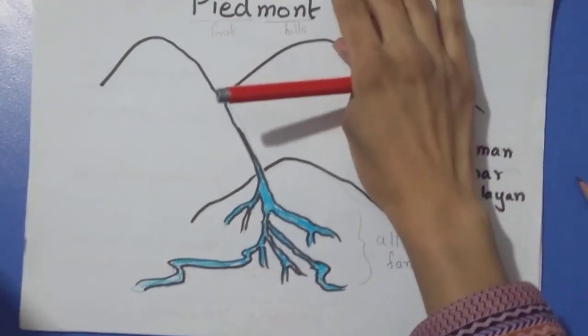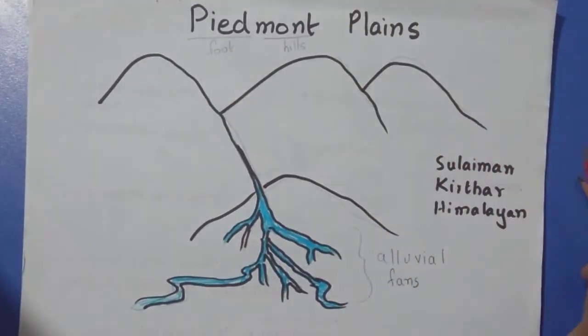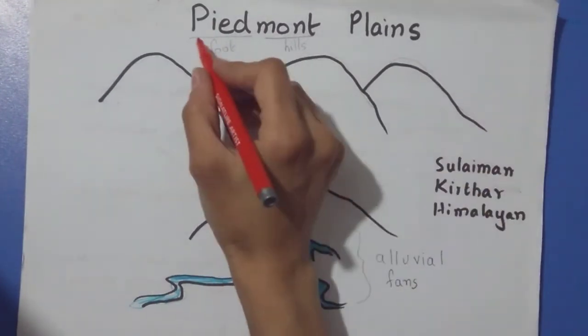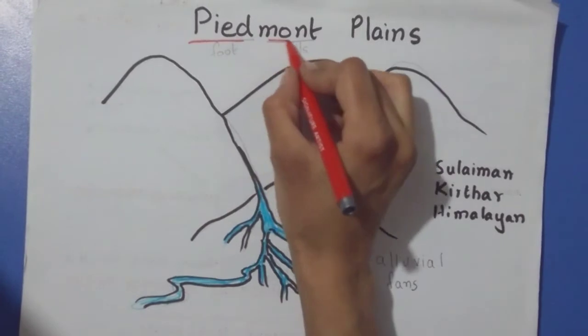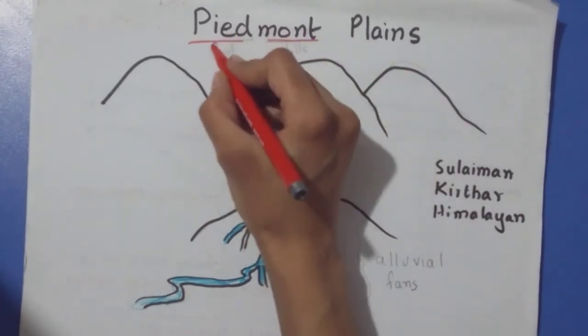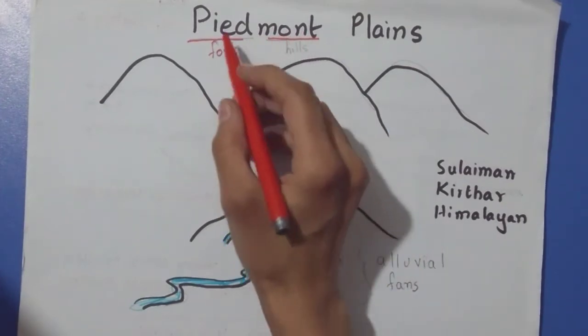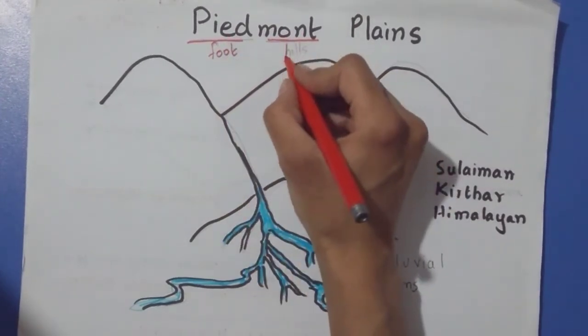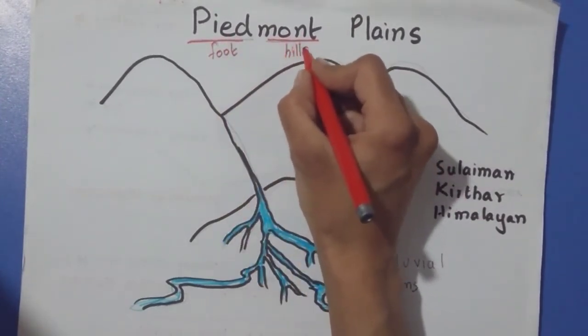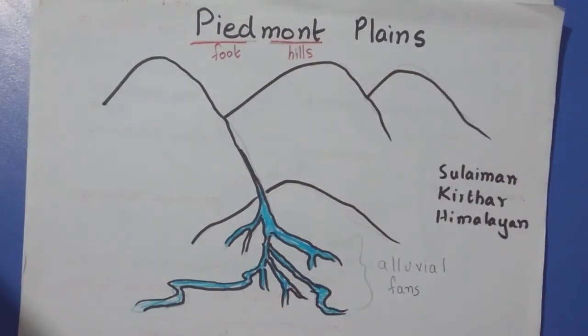Let's begin with Piedmont Plains. The word is a little different because it's of Italian origin. It can be divided into two: Pied and Mont. Pied is an Italian word meaning foot, and Mont means hills.